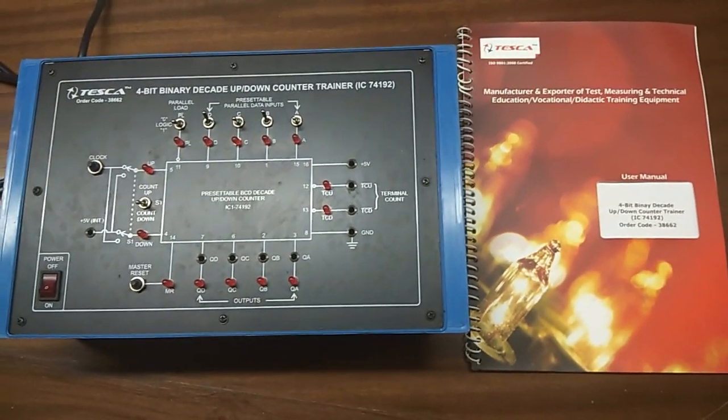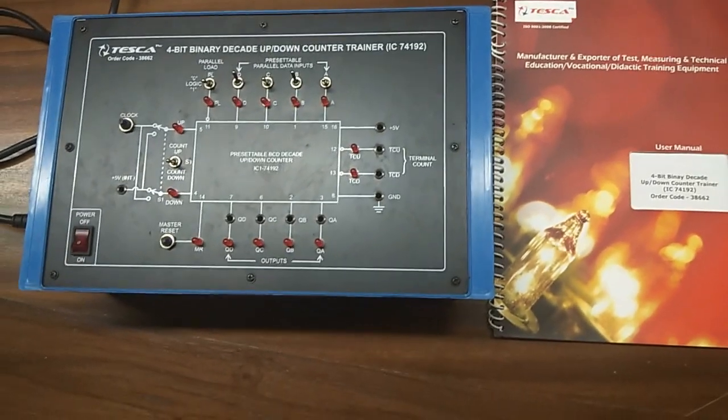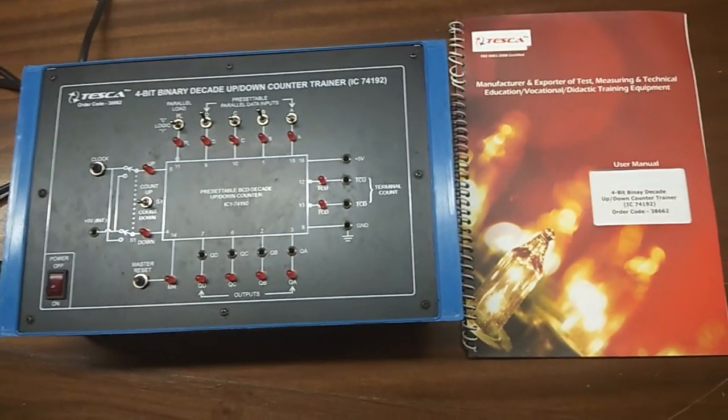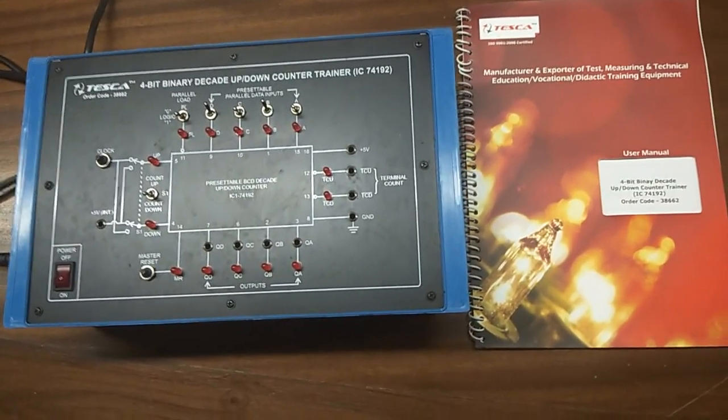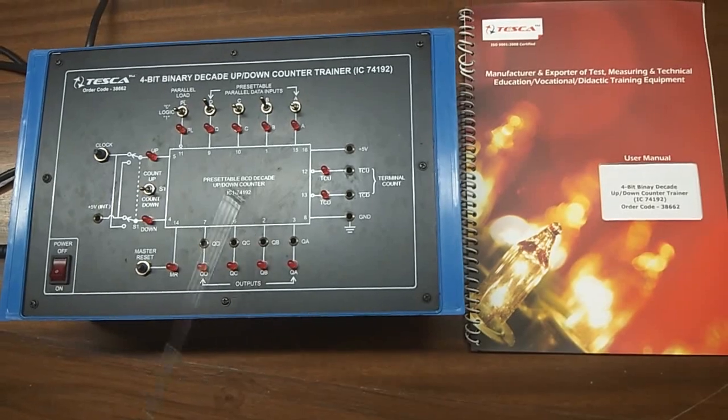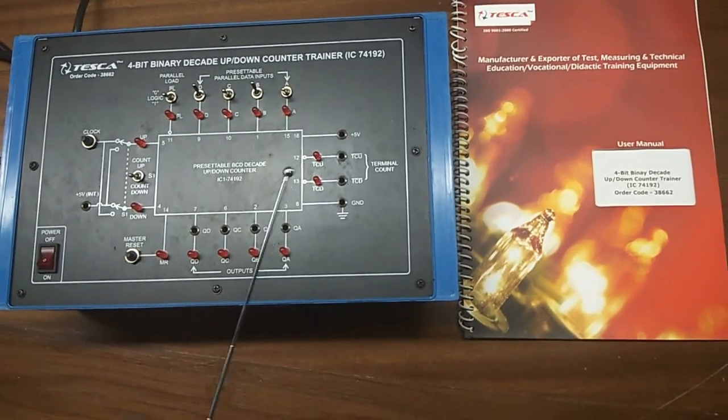Today we are going to show you our 4-bit binary decade up-down counter trainer kit. Order code is 38662. This is the trainer kit and this is the mimic diagram given on the trainer kit.